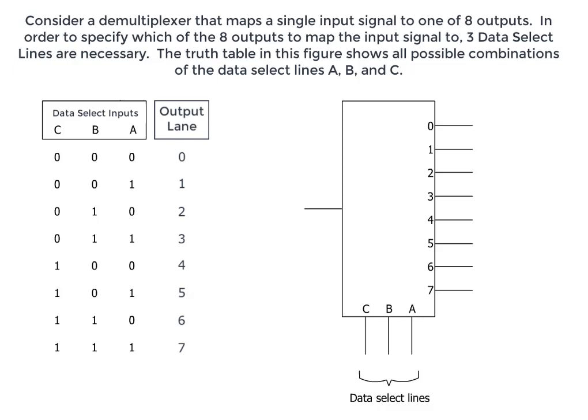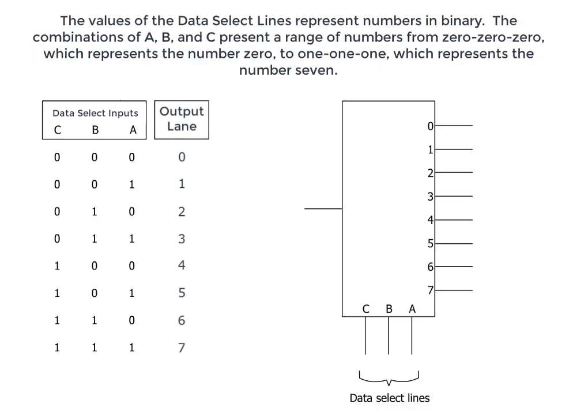The truth table in this figure shows all possible combinations of the data select lines a, b, and c. The values of the data select lines represent numbers in binary.